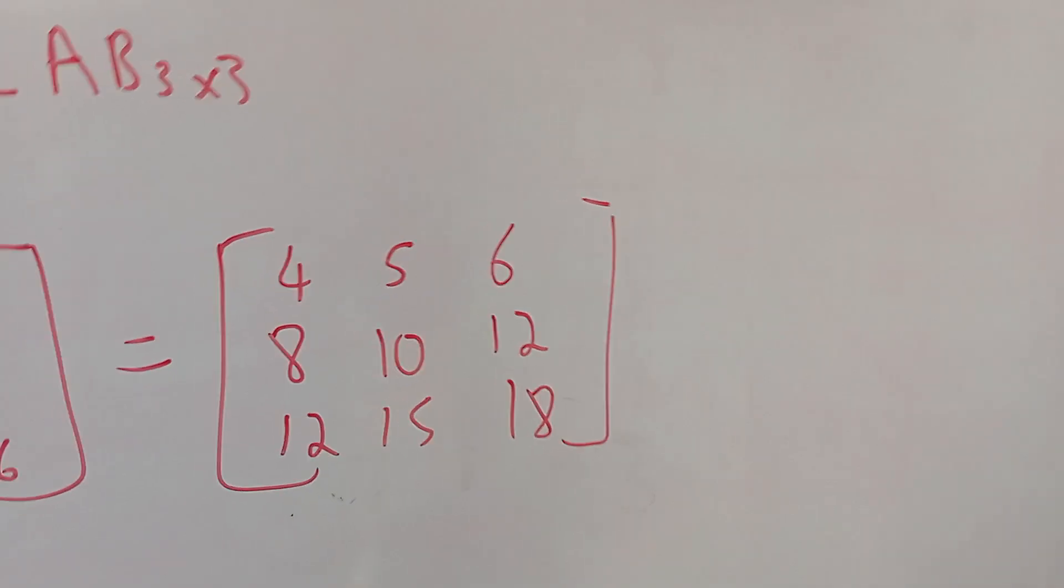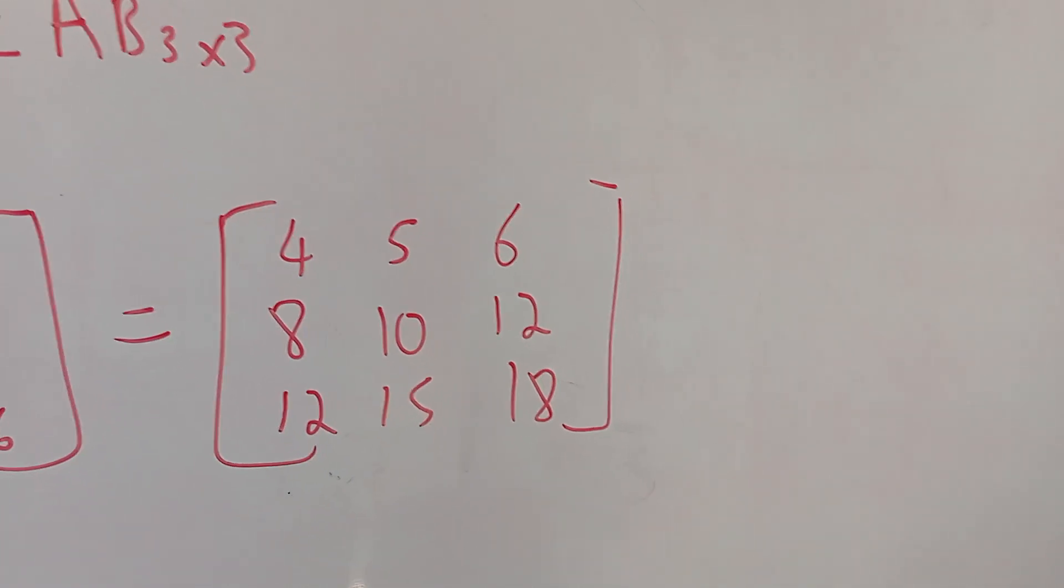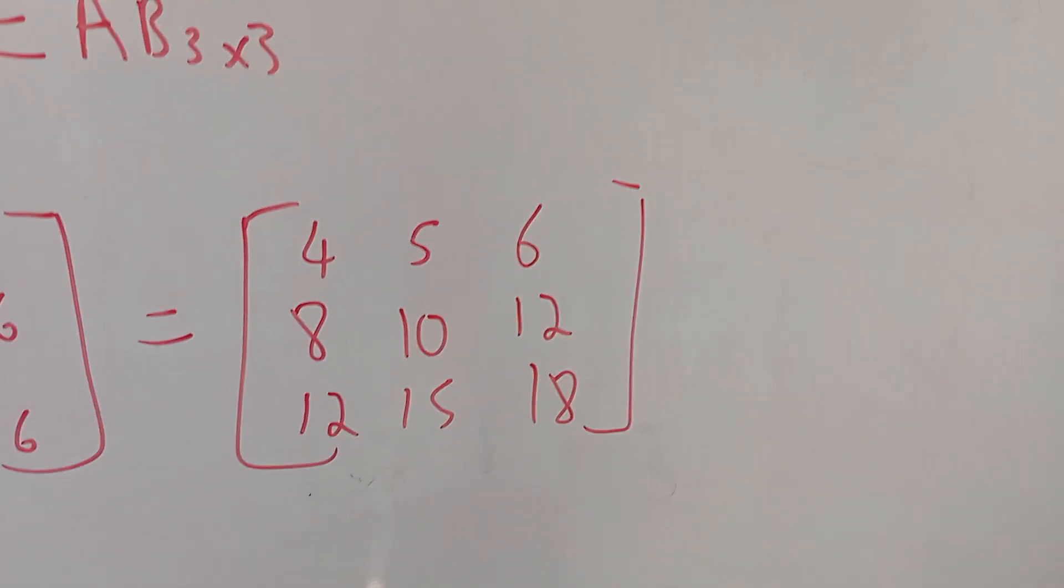So this is our final matrix: 4, 5, 6 in the first row, 8, 10, 12 in the second row, and 12, 15, 18 in the third row.